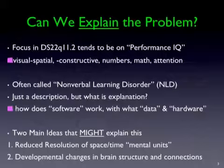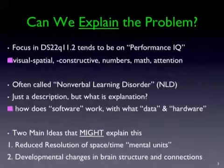There are two main ideas that might explain this. One is the notion of reduced resolution in space and time — I'll explain that in simple terms. The other is developmental changes in brain structure and connections. I think these two things together — the hardware changing in a certain way and the software changing in a certain way — might tell us how we can move forward with not only an explanation but potential interventions.